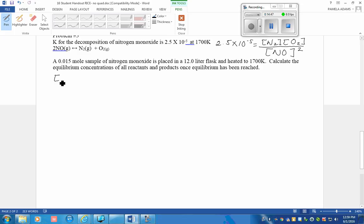Now we have to figure out the starting concentrations. They tell us we have 0.015 mole of the NO in a 12 liter flask. So we have an initial concentration of the NO of 0.00125 molar. We have no nitrogen and we have no oxygen to begin with. So Q is smaller than K, so this reaction must shift to the right in order to reach equilibrium.